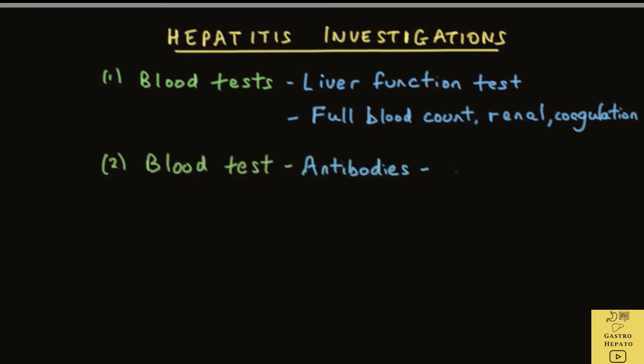There are also blood tests done to look for antibodies to viral hepatitis A, B, and C. Antibodies are proteins produced by white cells that attack invaders like viruses and germs. The presence of these antibodies suggests that the virus is present in the body.